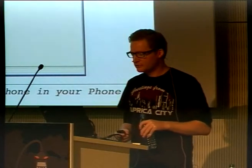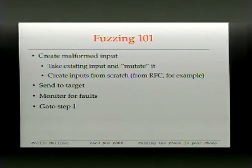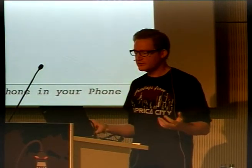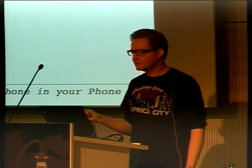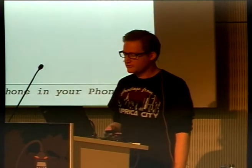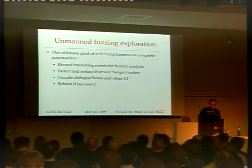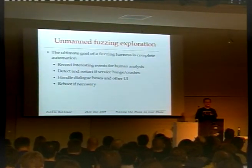Now a short introduction to fuzzing. Basically, fuzzing means taking some input to an application or protocol and creating malformed input — either by capturing existing input from the network and mutating it, then giving it to the application to see if it crashes, and repeating until something happens. Alternatively, you can read the specs and write your own generator to create malformed messages. You don't want to do this manually, so you set up a fuzzing framework that generates malformed input and records interesting events — crashes, or whether the device hangs.